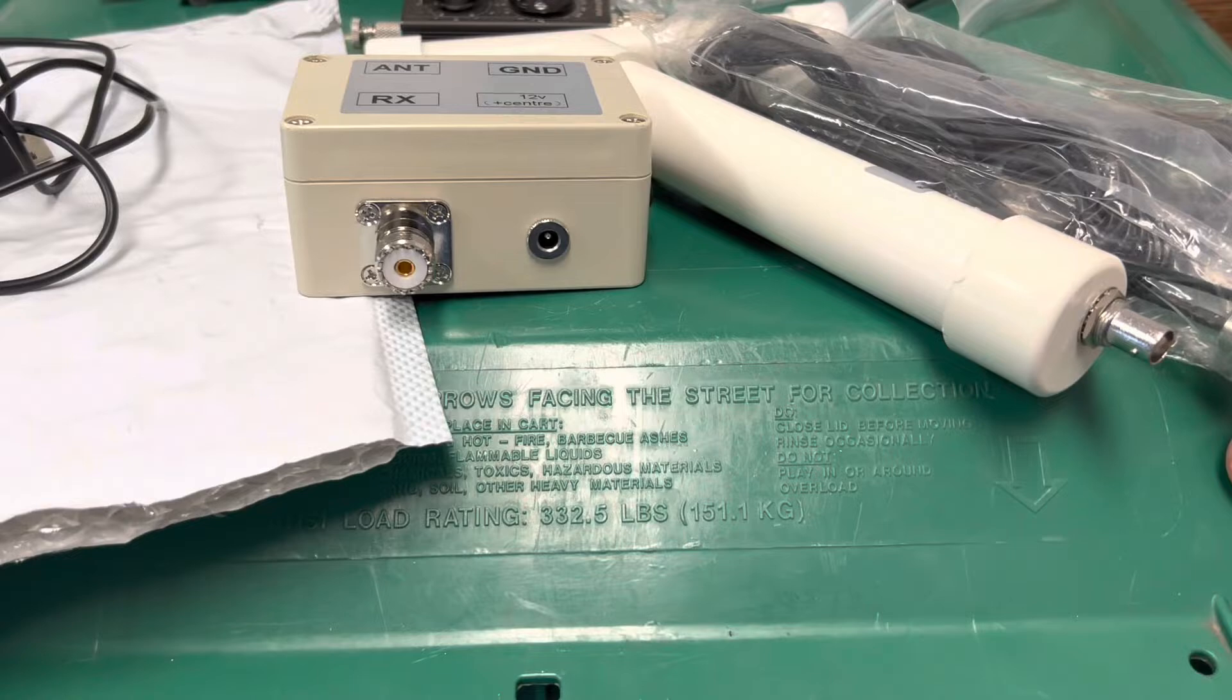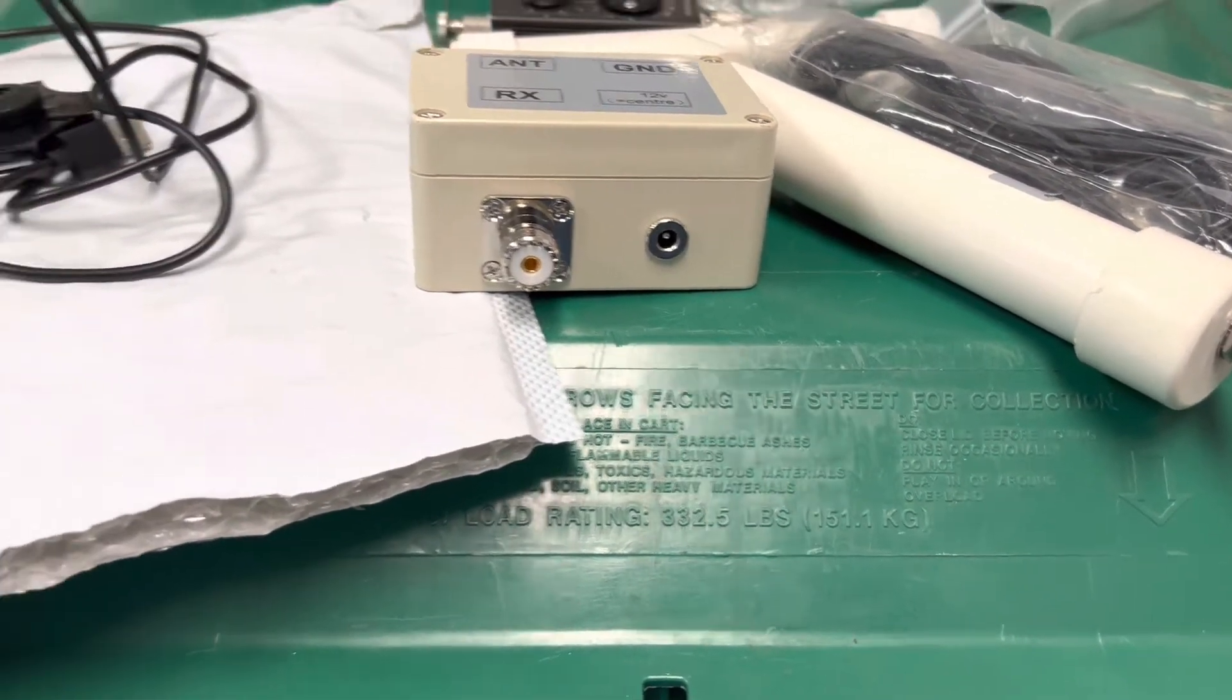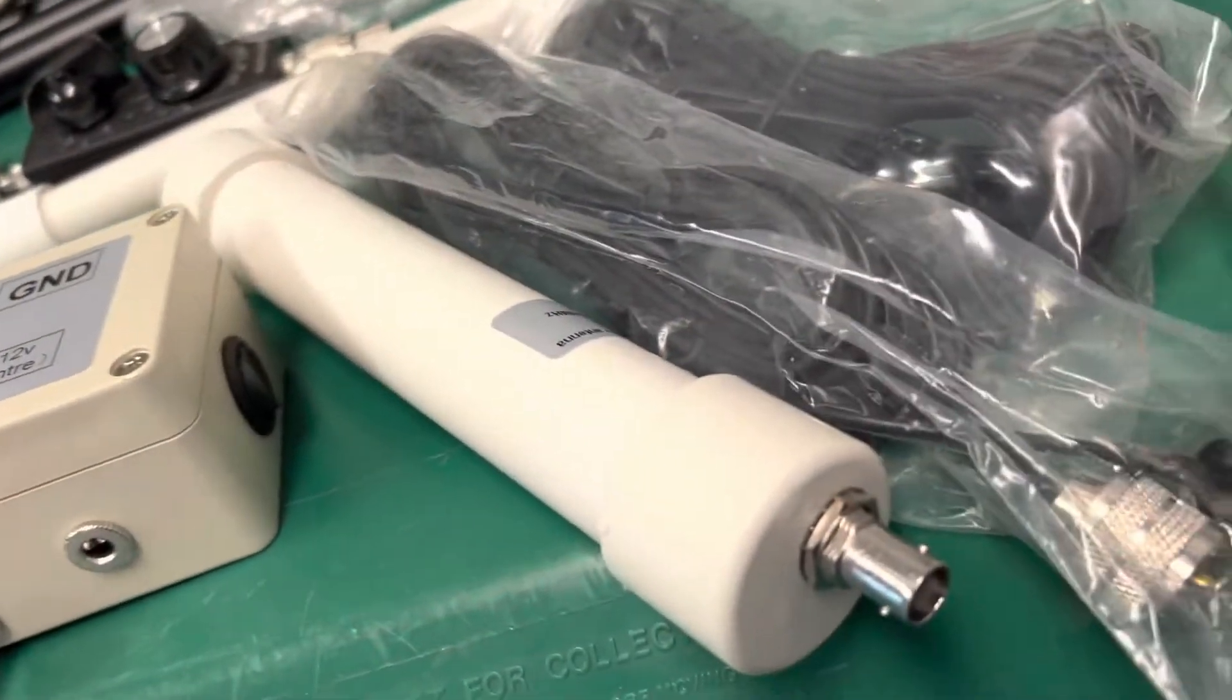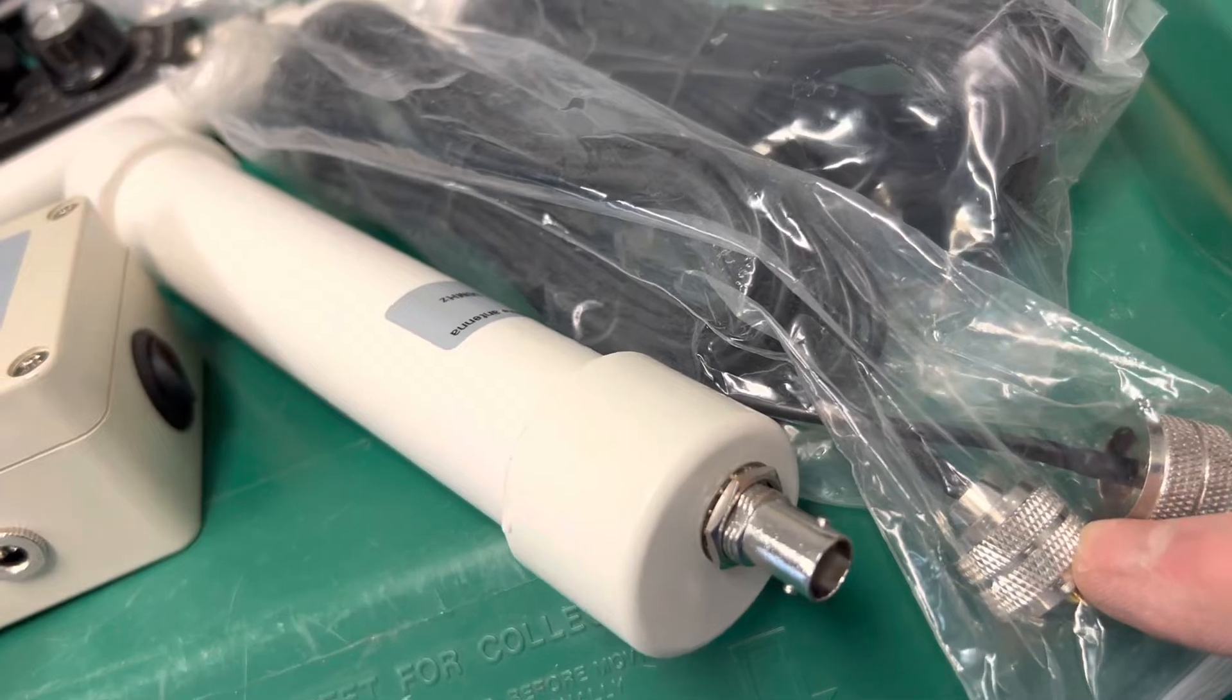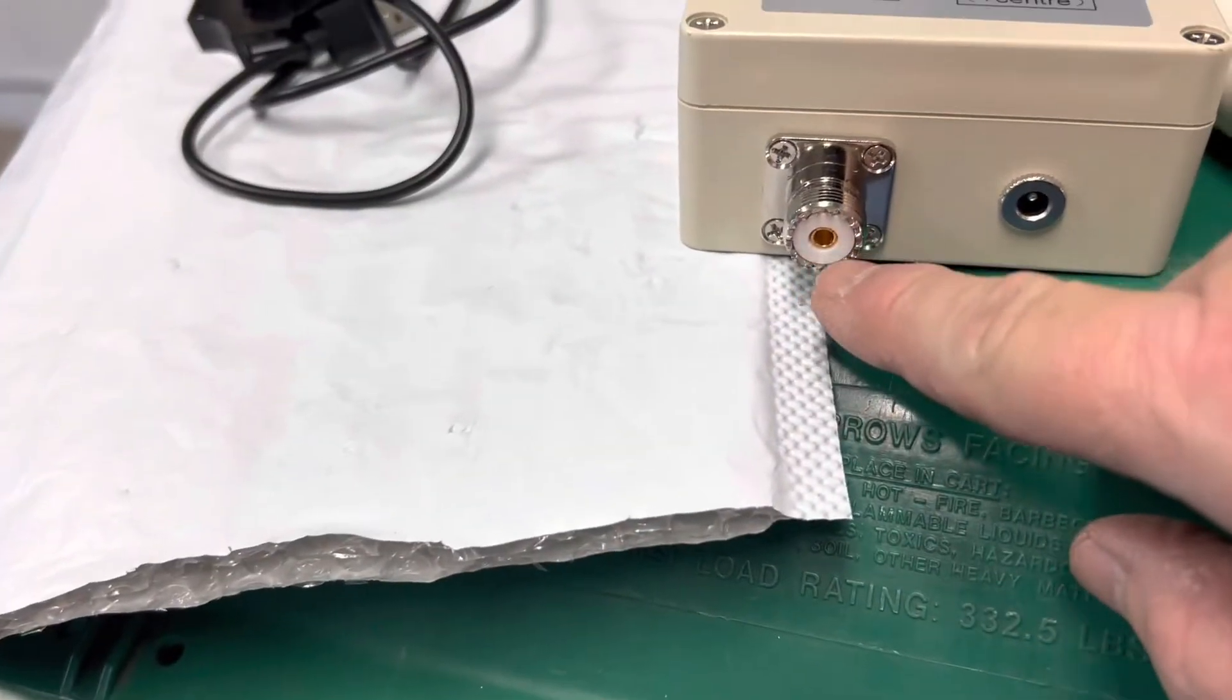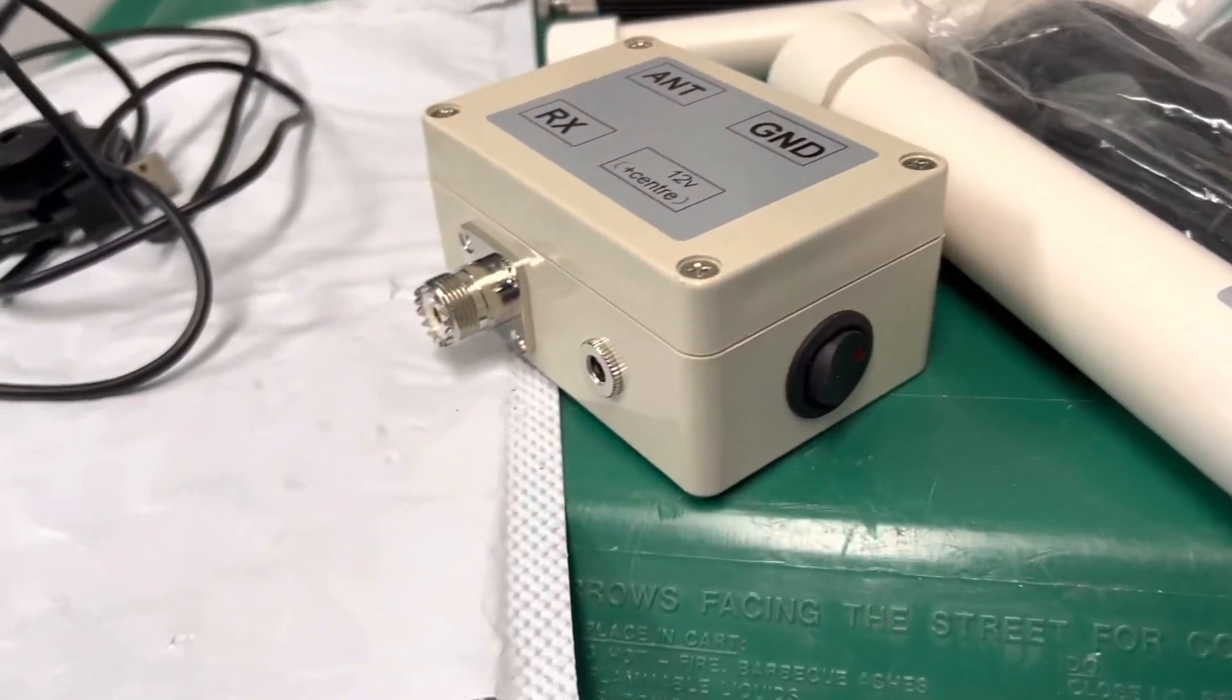Pretty basic. You know, don't have to be a rocket scientist to connect the BNC connector from here to here. Cable. Regular coax to here. Okay, you plug your power supply in. You run a ground line. Yeah, to ground.